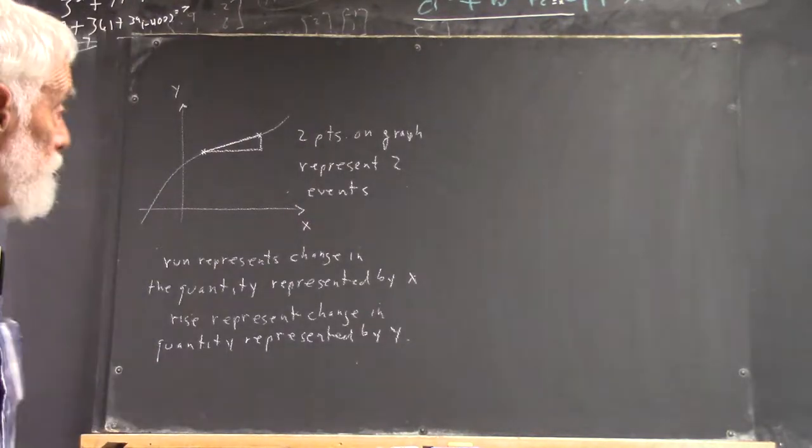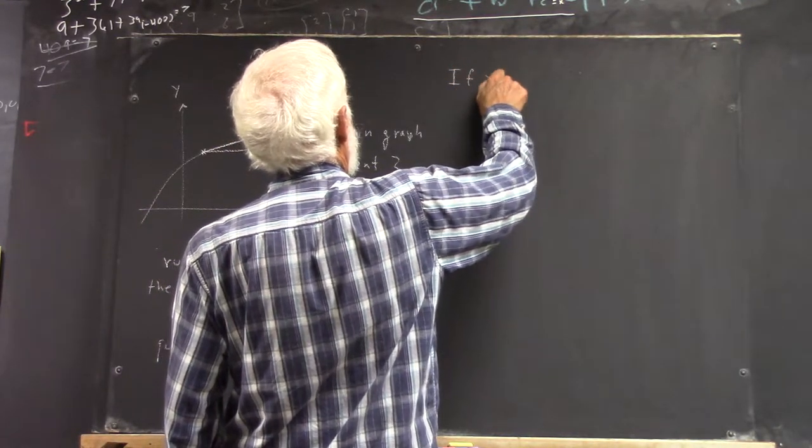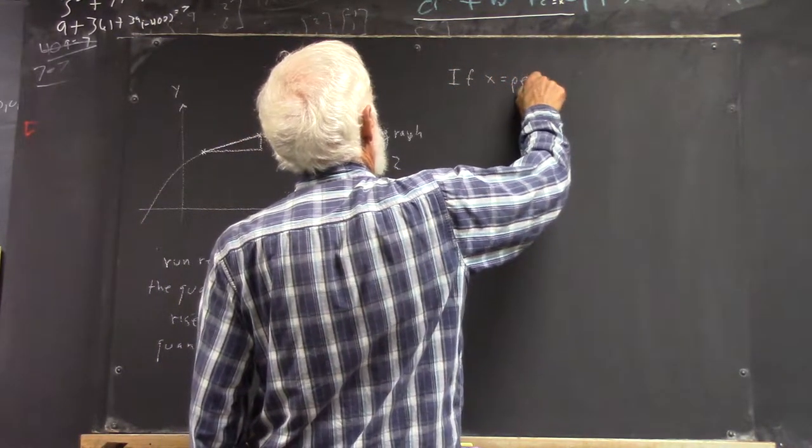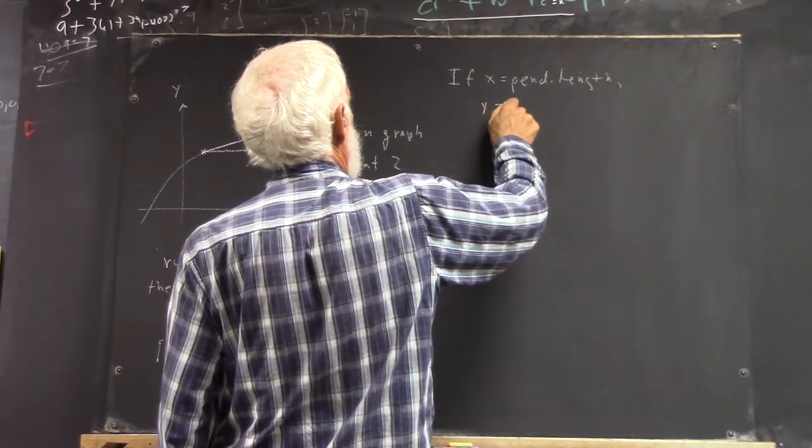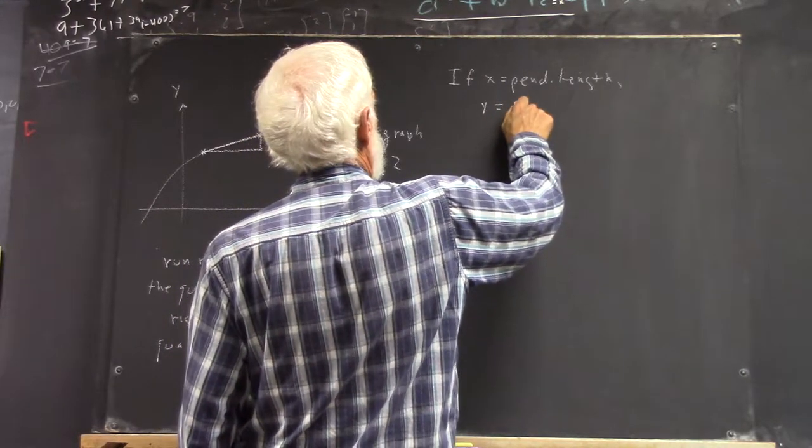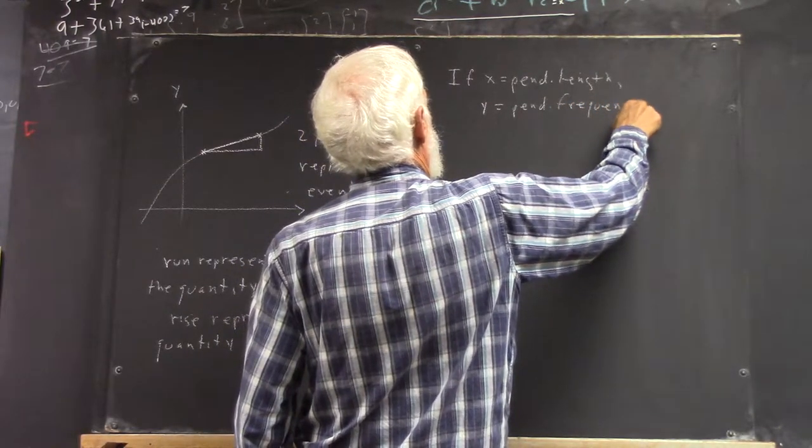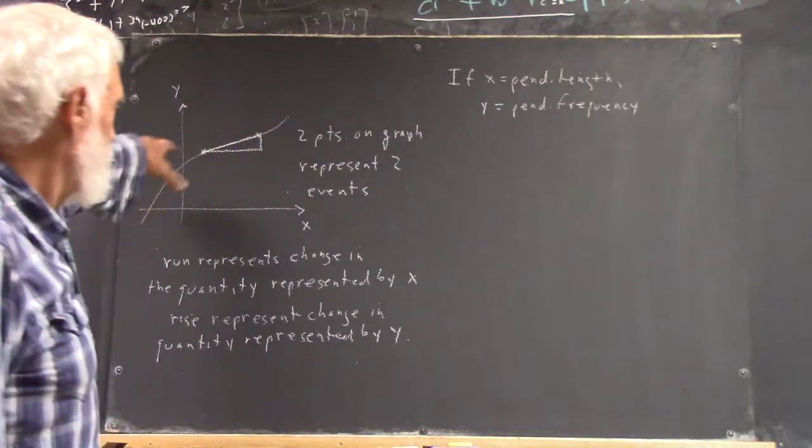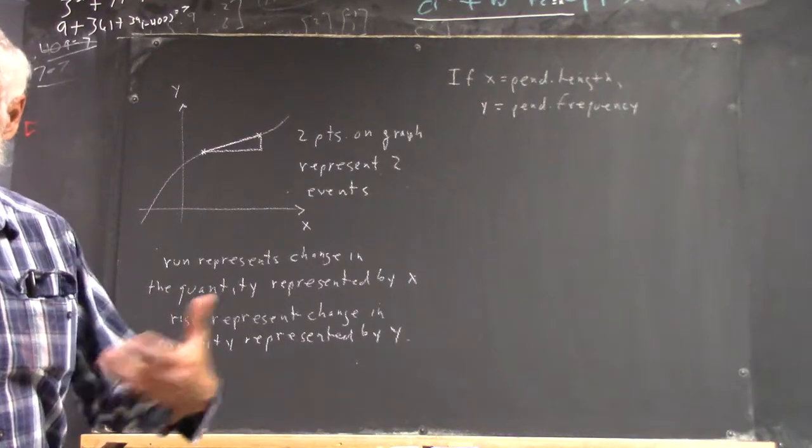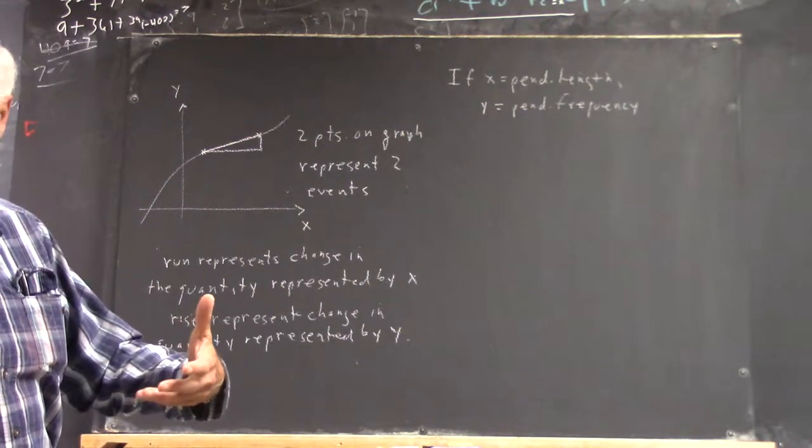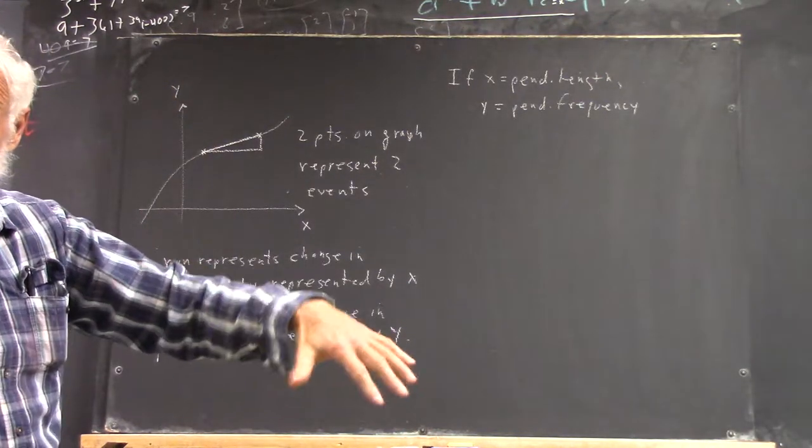Now, if x is a pendulum length and y is a pendulum frequency, then this graph would be a graph of pendulum length versus frequency. More generally, you have two points on the graph of pendulum length versus pendulum frequency. And frequency goes down with length, so it kind of looks like the one over x function.